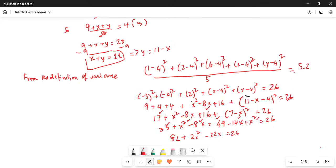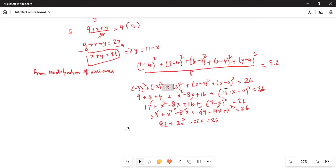I will subtract 26 on both sides, so 82 minus 26 is 56. So 2x squared minus 22x plus 56 is equal to 0. Now we take out the common factor 2: x squared minus 11x plus 28 is equal to 0.